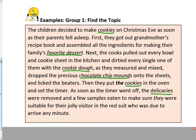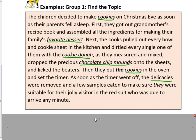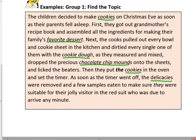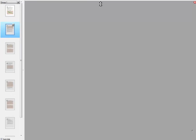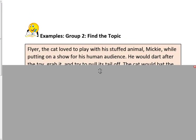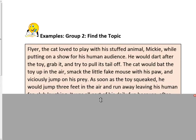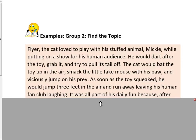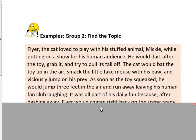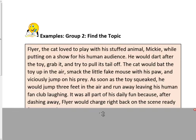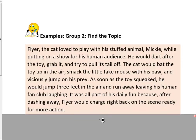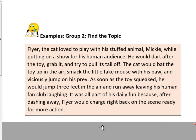We're going to look at another example, finding the topic again. Flyer the cat loved to play with a stuffed animal, Mickey, while putting on a show for his human audience. He would dart after the toy, grab it, and try to pull its tail off. The cat would bat the toy up in the air, smack the little fake mouse with his paw, and viciously jump on his prey. As soon as the toy squeaked, he would jump three feet in the air and run away, leaving his human fan club laughing. It was all part of his daily fun because after dashing away, Flyer would charge right back on the scene, ready for more action.